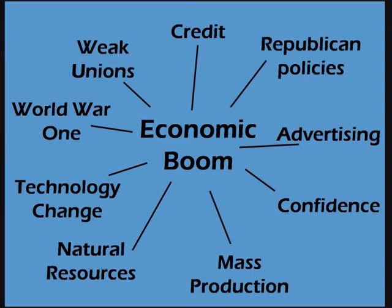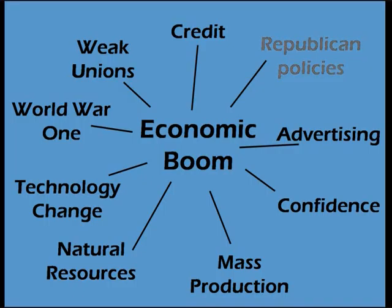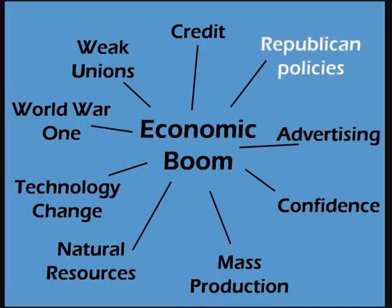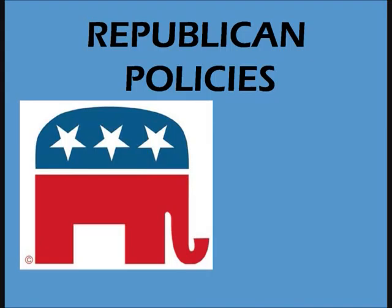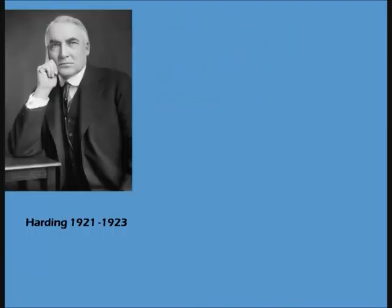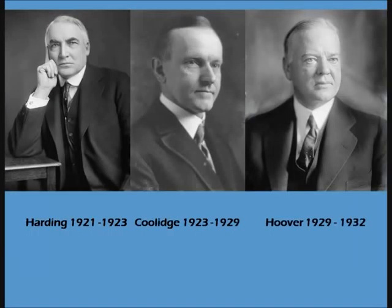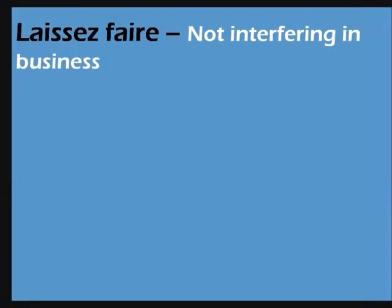Let's take an example: republican policies. The 1920s were presided over by a succession of republican administrations. Presidents Harding, Coolidge and Hoover all continued similar policies whereby they avoided interference in business. This was termed laissez-faire, or 'let it be'.